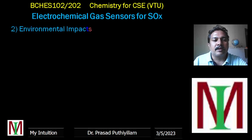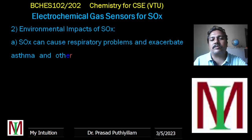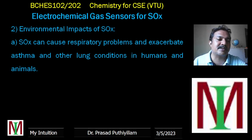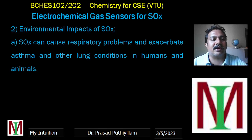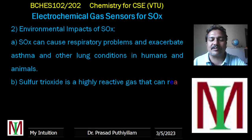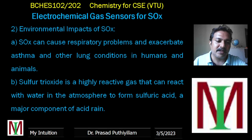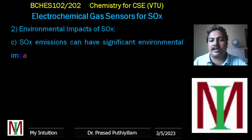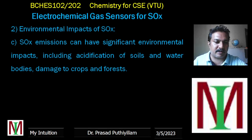The environmental impacts of SOX: oxides of sulfur can cause respiratory problems and exacerbate asthma and other lung conditions in humans and animals. Sulfur trioxide is a highly reactive gas that can react with water in the atmosphere to form sulfuric acid, which causes acid rain. SOX emissions can have significant environmental impacts including the acidification of soil and water bodies, and damage to crops and forests — topics we studied in environmental science.